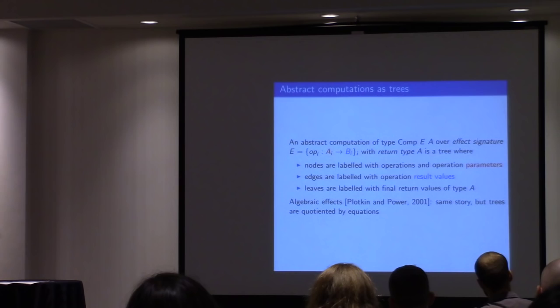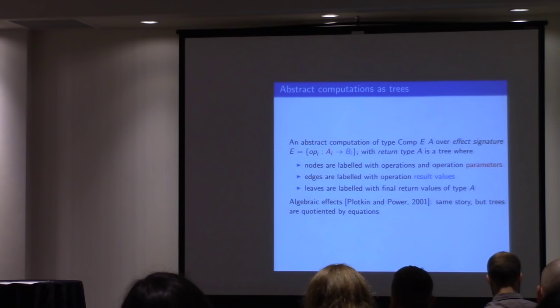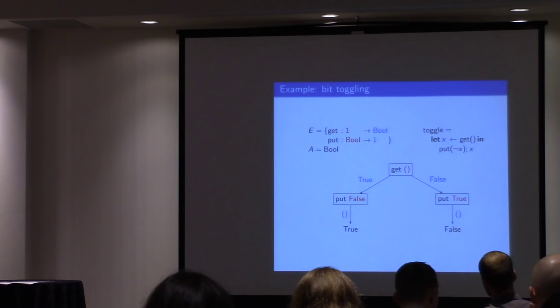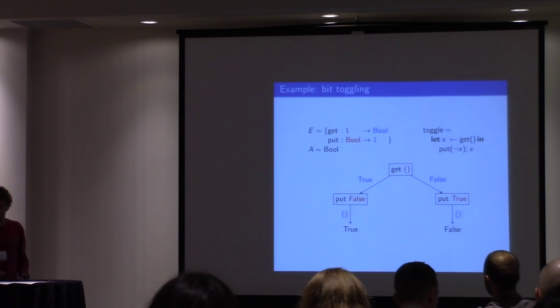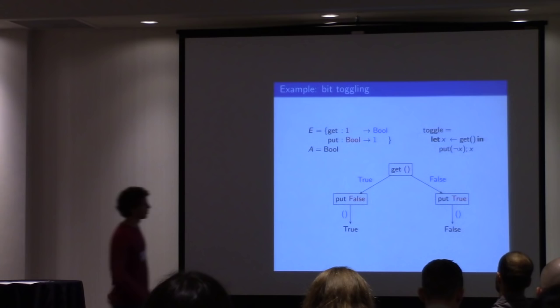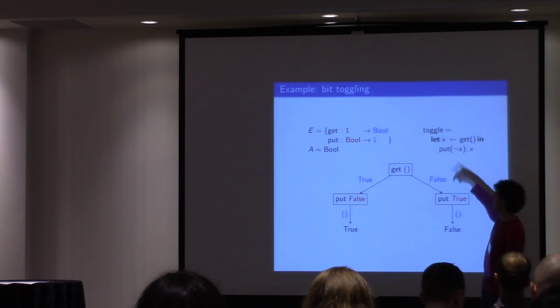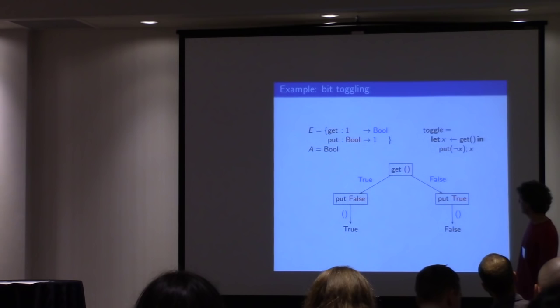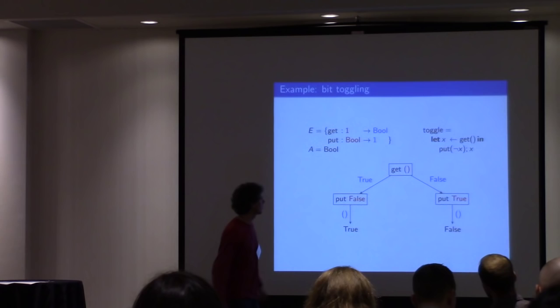A very simple example: an effect signature where I have a get operation and a put operation over a Boolean state. I might write a computation that just gets the value of the state, and then does something, and then returns the initial value. And this corresponds to the tree shown here, with true or false appearing at the leaves.